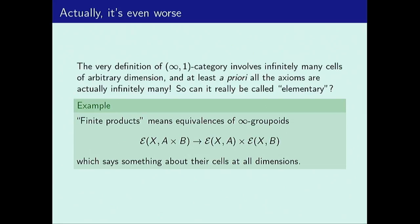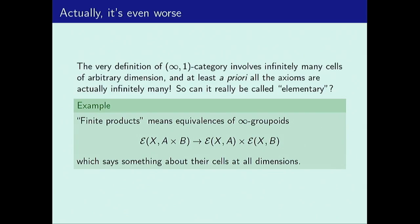For most cases this is not a real big problem because there are different ways to deal with it. You could express this notion of equivalence in a more finitary way. One way would be to use a synthetic theory of infinity categories where an adjunction or equivalence can be detected in the homotopy two-category. Another way would be to use a categorical presentation with one-categories — like fibration categories or Quillen model categories — where you have strict universal properties expressible in a one-categorical way, which nevertheless yield these higher categorical versions. But it's trickier for the object classifiers, because the universal property involves a subgroupoid of the entire category E rather than its hom groupoids.